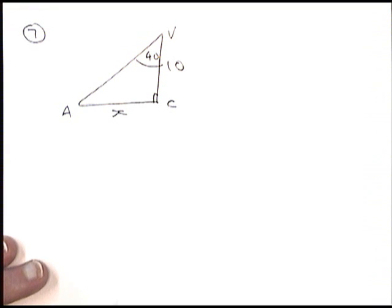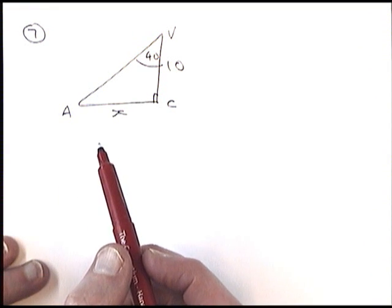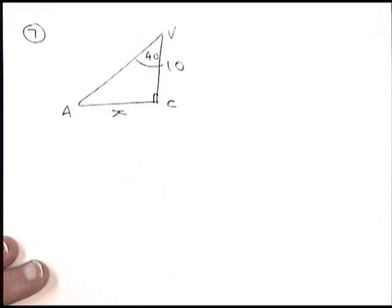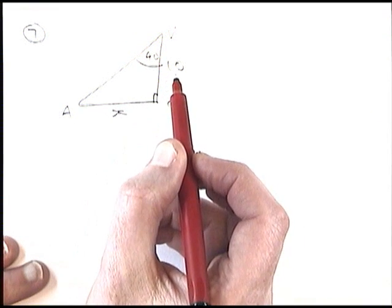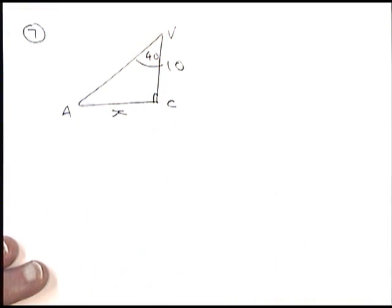I've got to find the distance AC and I've drawn out one of the triangles from the pyramid that's given. It's the back left hand face, ACV, where I know I've got a 40 degree angle there, a distance of 10 here, and AC is what I'm trying to find.